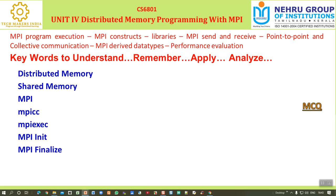MPI Finalize is an instruction that informs the MPI system that the executed task has been successfully completed. Once the message reaches the MPI system, the resources allocated for that task can be freed. MPI Finalize is the mechanism to instruct the MPI system to release resources reserved for executing a particular task.